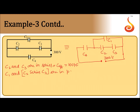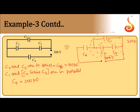So the effective capacitance Cp equals 100 and 100 in parallel, which gives 200 picofarad. So this entire combination put together will be 200 picofarad.